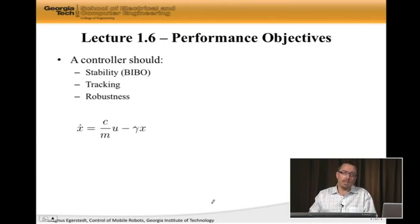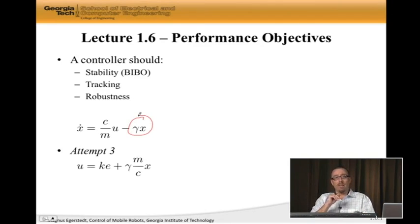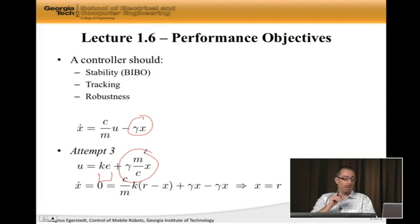Recall this was the model. When I introduced this wind resistance term here, we had a problem—the proportional regulator couldn't overcome it. So let's have another controller, one that explicitly cancels out the effect of wind resistance. Here is attempt three: I'm going to use the proportional part we already talked about, and then add this term, which is plus gamma m over c times x.